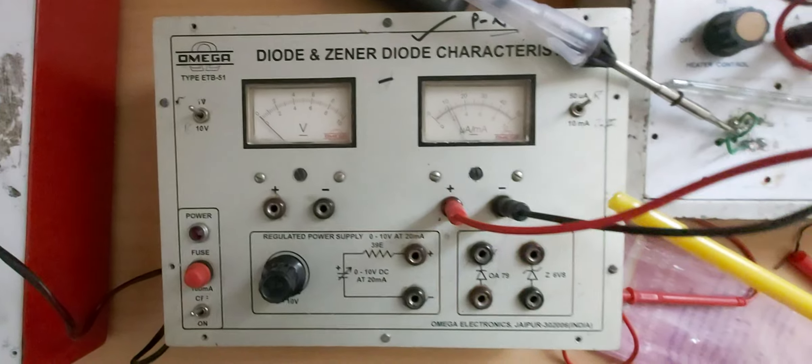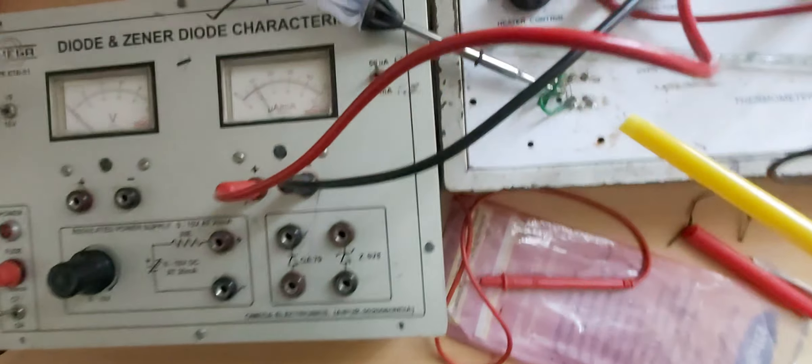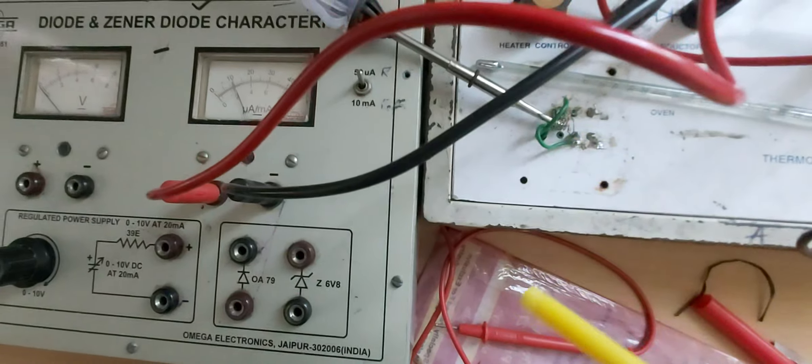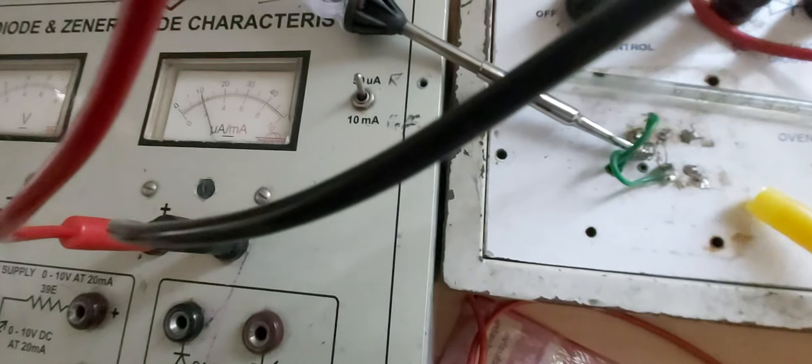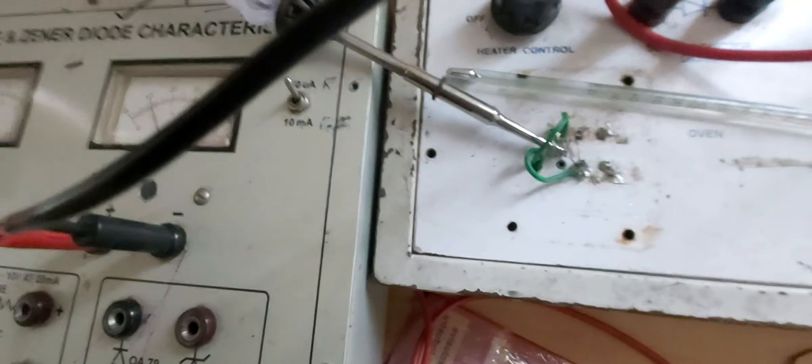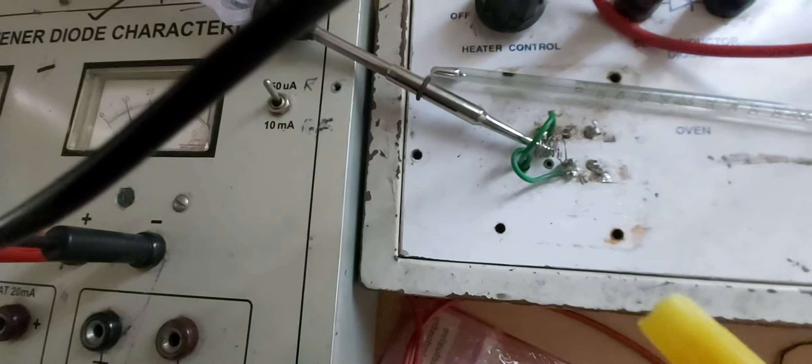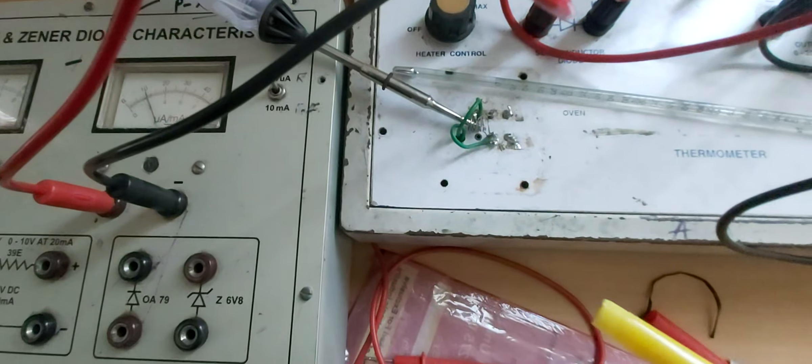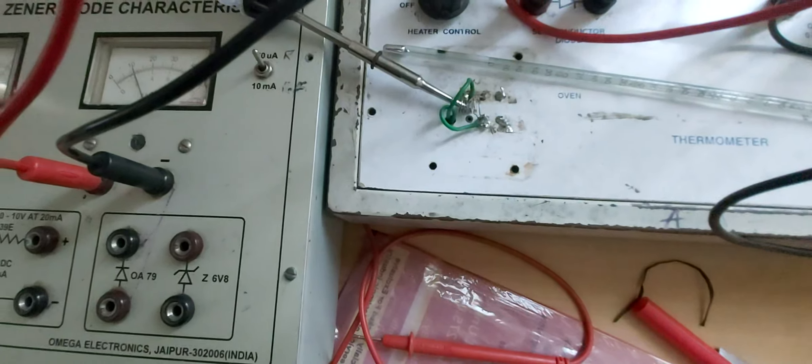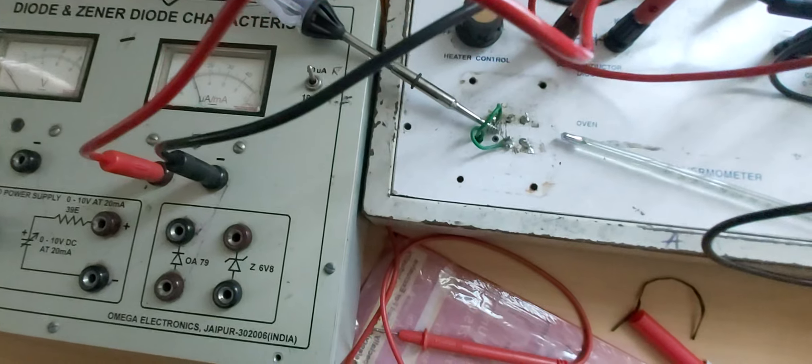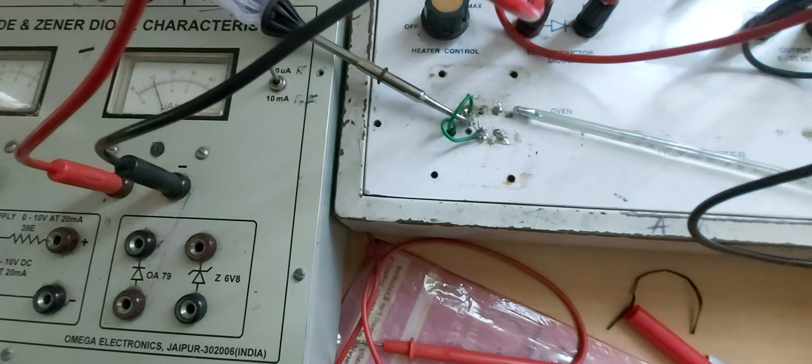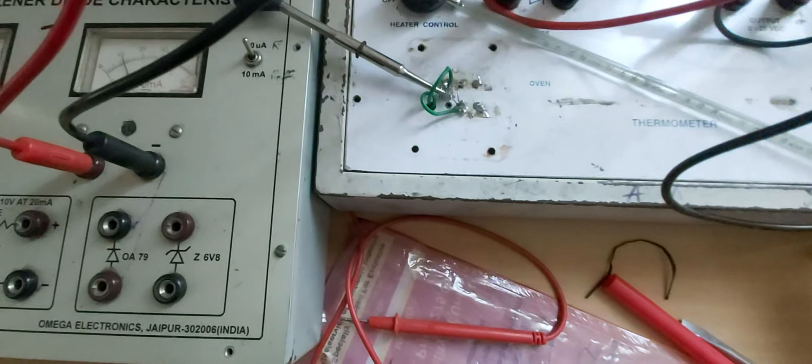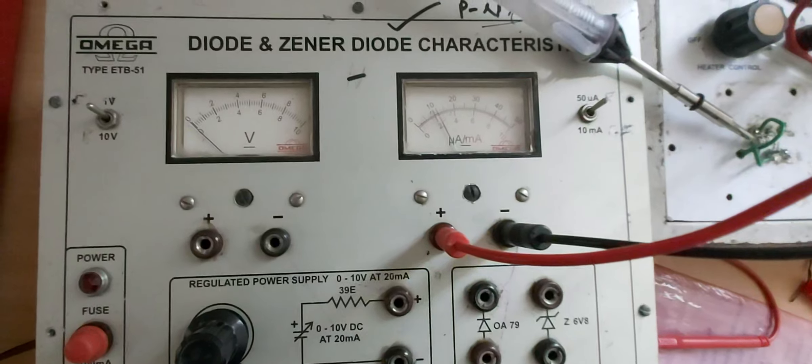We are increasing gradually the temperature of this diode. You can see now the diode is there and there is this heating element we are using, we are using a soldering iron. We will keep on measuring the temperature using a thermometer and take readings for the temperature variations and the current variation.